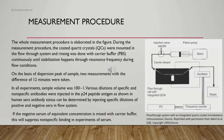The whole measurement procedure uses a flow-through system with an integrated quartz crystal microbalance immunosensor. Coated quartz crystals are mounted in the flow-through system and rinsed with carrier buffer continuously until stabilization of resonance frequency. Based on the dispersion peak of the sample, two measurements with a difference of 12 minutes are taken, with a sample volume of approximately 100 µL. Various dilutions of specific and non-specific antibodies are injected with the P24 peptide antigen. Antibody status can be determined by injecting specific dilutions of positive and negative sera — negative serum mixed with carrier buffer suppresses non-specific binding in serum experiments.